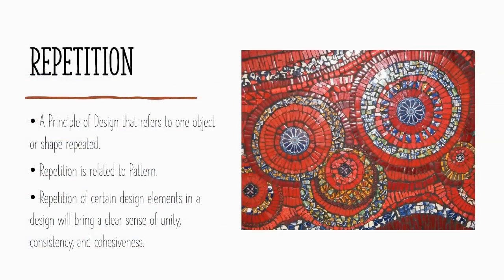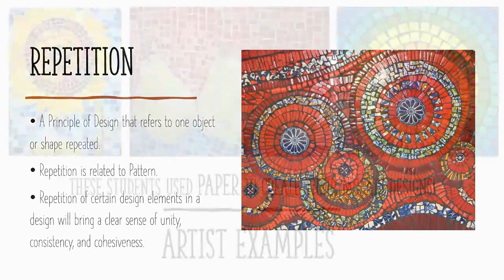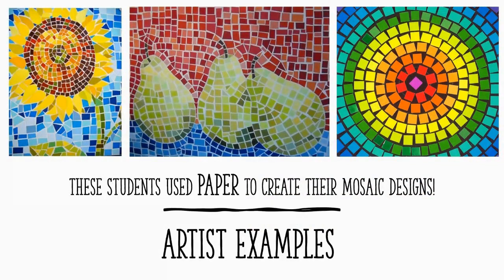Repetition is another important principle of design and refers to one object or shape repeated. Repetition is definitely related to pattern — the repetition of certain design elements in a piece brings a clear sense of unity, consistency, and cohesiveness. Take a look at some artwork examples created with paper in this mosaic style. Some are abstract designs using pattern and repetition, others are still life objects like the pears in the middle, and you could also pick a subject matter like the sunflower on the left.